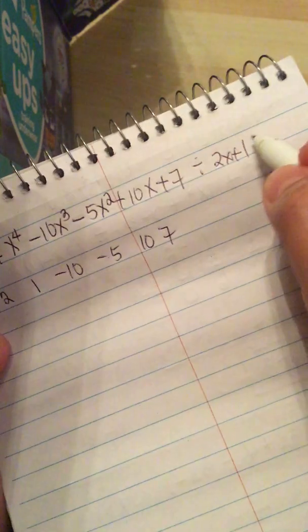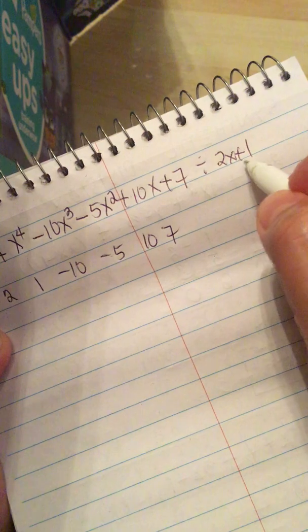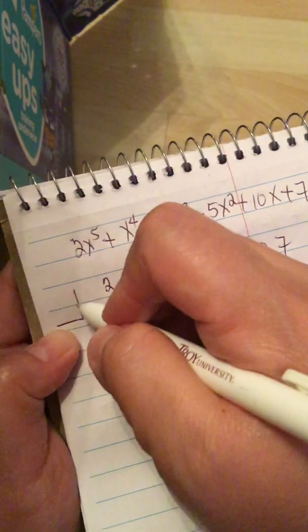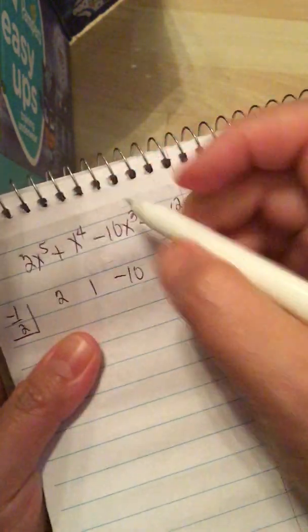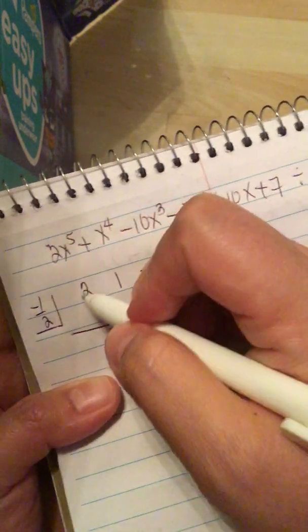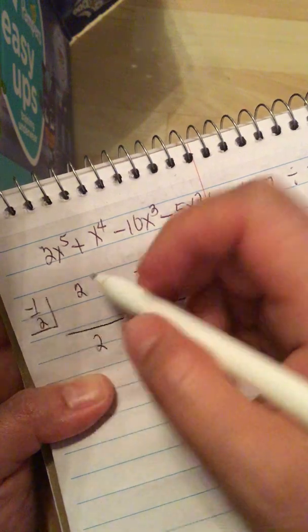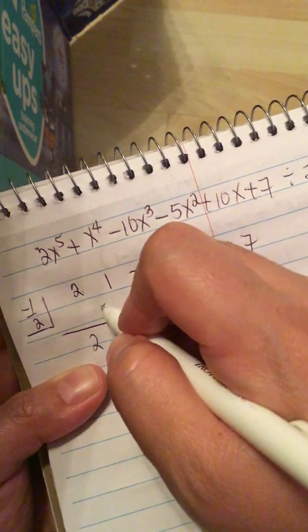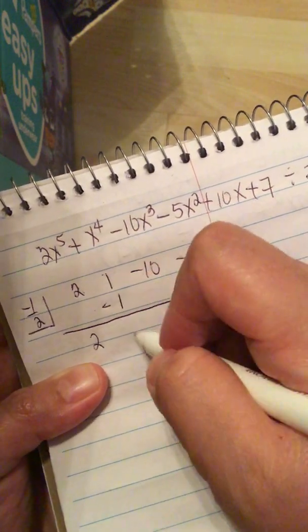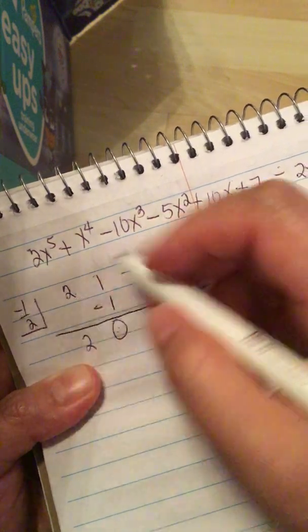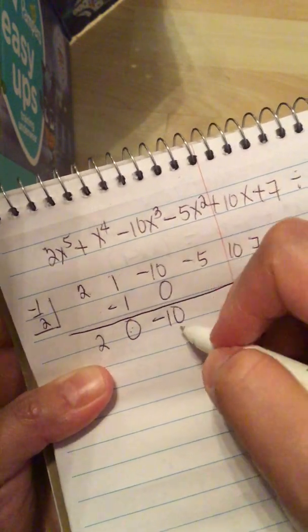So this is divided by the divisor minus 1 half. So we bring down the 2. 2 times negative 1 half is a minus 1. 1 minus 1 is 0. 0 times negative 1 half is 0. Minus 10.